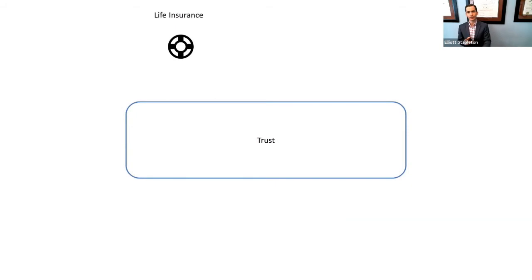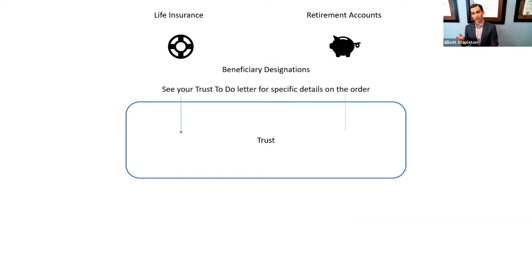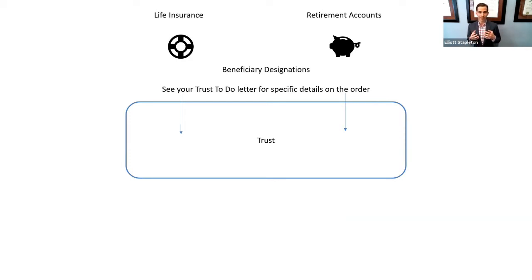First, let's talk about life insurance and retirement accounts. These assets stay in your name while you are alive, but upon death, the beneficiary designations that you have listed will determine where those assets are transferred. So generally speaking, you would list your trust as the beneficiary of those accounts.